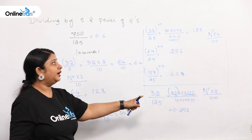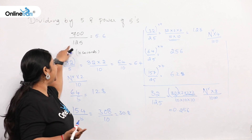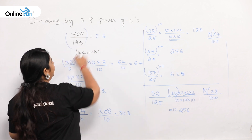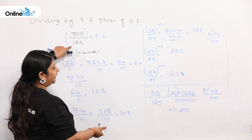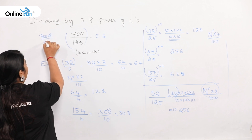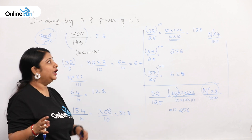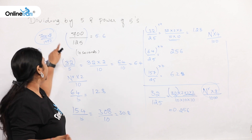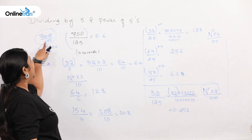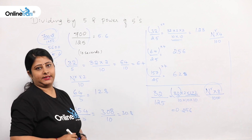You can look at the pattern and easily guess the answer for 700 divided by 125. When there is 125, multiply the numerator by 8 and divide by 1000. So 700 × 8 = 5600, and 5600 divided by 1000 is 5.6. The final answer is 5.6.